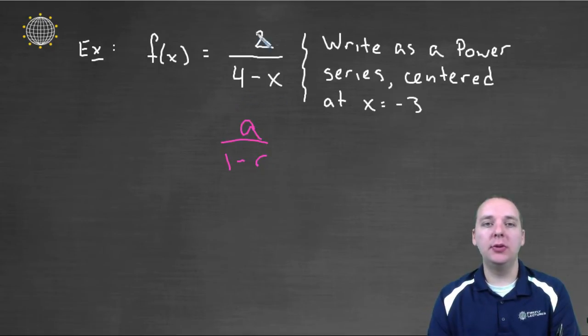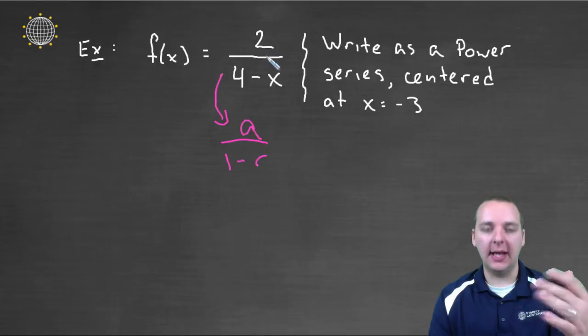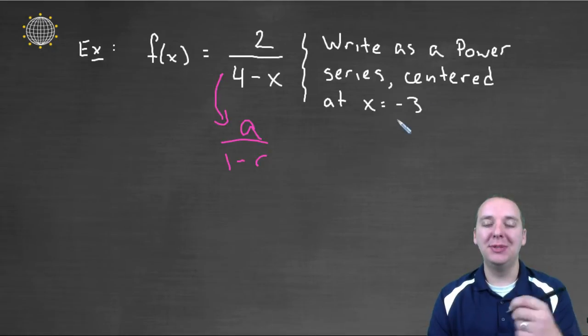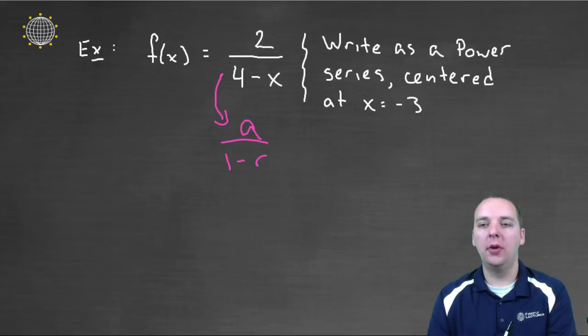So what I'm going to try to do is fashion this into this format, but there's one thing I have to consider as I'm converting this into a over 1 minus r. I'm also supposed to have this centered specifically at negative 3. So I can't just have it centered wherever I want it centered.